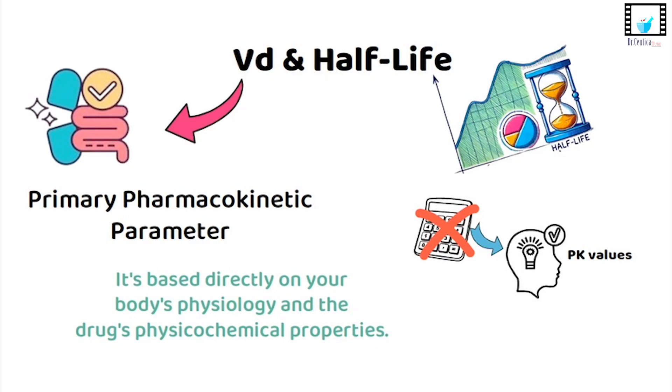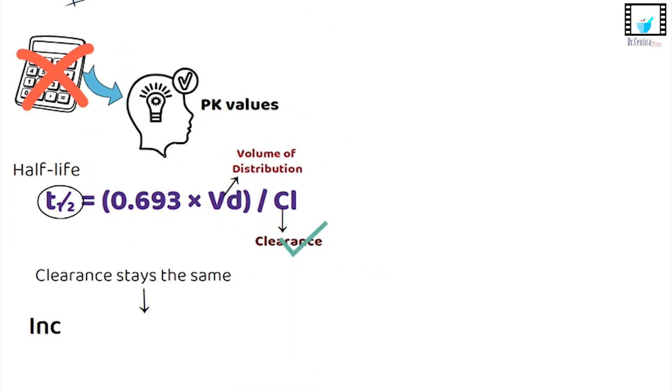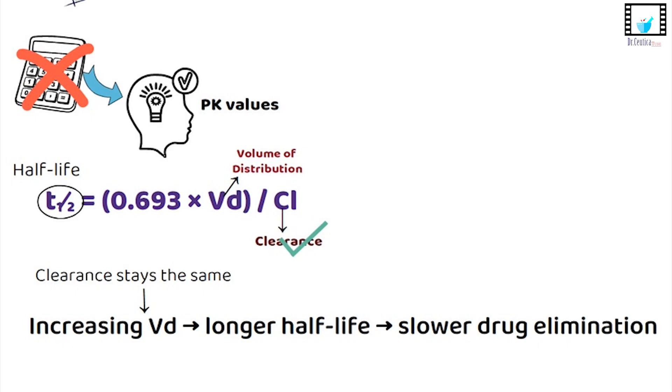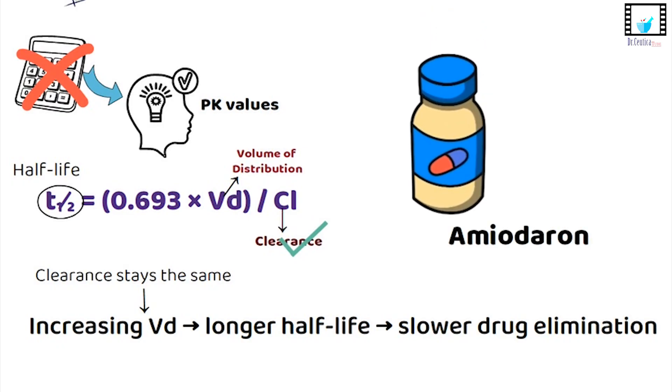And that brings us to one of the most important relationships in pharmacokinetics, relating half-life, VD and clearance. From what you see in front of you, we can say that if clearance stays the same, increasing VD would mean having longer half-life, which is reflected by having slower drug elimination. That's why lipophilic drugs deeply distributed in tissues might hang out for weeks.